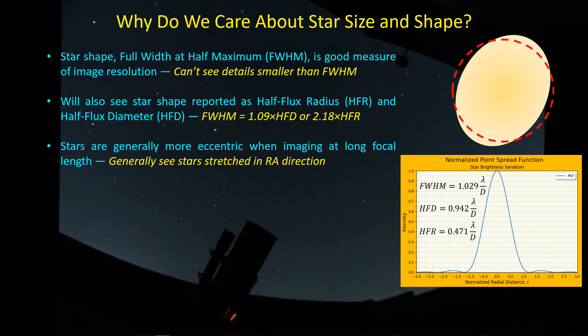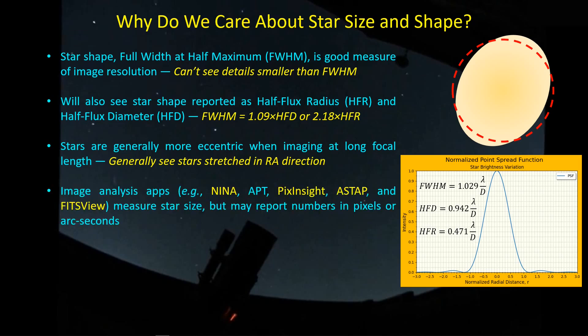Unfortunately, stars aren't always round, and that certainly is the case when you're imaging with a long focal length telescope, as we do during galaxy season. They tend to be somewhat egg-shaped. What you'll typically find is that your stars will be stretched in the RA direction, because that's where gear mechanics, machining tolerances, etc., come into play, and that's where PHD2 is trying to do its work in keeping the guide star centered. Image analysis apps — both in real-time and in post-processing, NINA in real-time, APT in real-time, PixInsight post-processing, ASTAP in post-processing, and FitsView in post-processing — all can provide some measure of star size, but you have to be careful because the star size may be reported in terms of pixels or in terms of arc seconds.